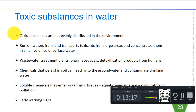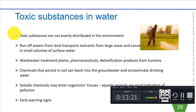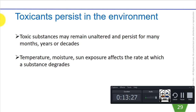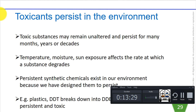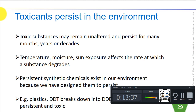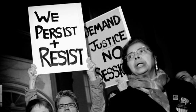Once toxic substances arrive somewhere, they might degrade quickly and become harmless, or they might remain unchanged and persist for many months, years, or even decades. The rate at which a substance degrades depends on its chemistry and on factors like temperature, pH, moisture, sun exposure. Persistent synthetic chemicals exist widely in our environment.